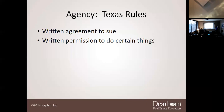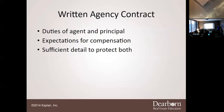The written agency contract sets out the duties of both the agent and the principal. It states exactly what Cody is going to do to list Miss Davenport's property, and what Miss Davenport will do to facilitate the listing. Similarly, a buyer rep form tells Keith what the agent will do to help find a property and what Keith will do to facilitate the process.